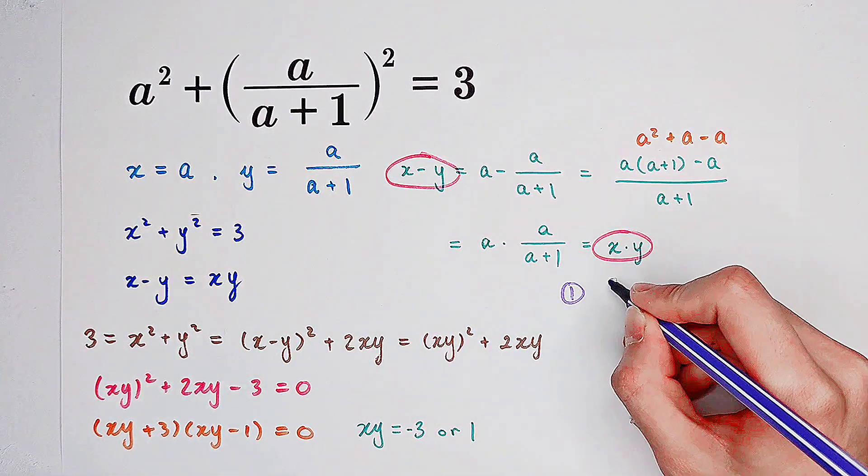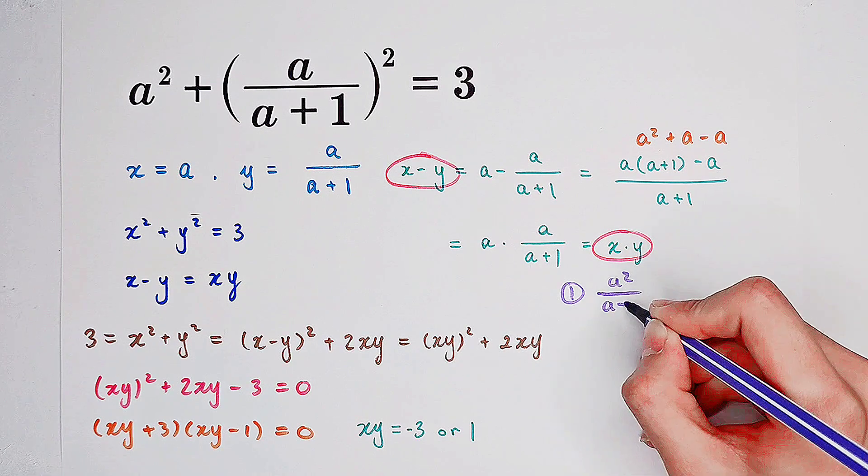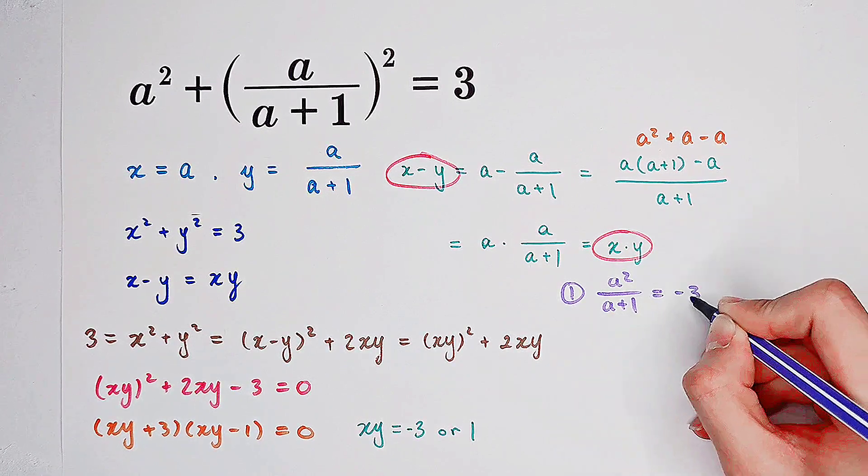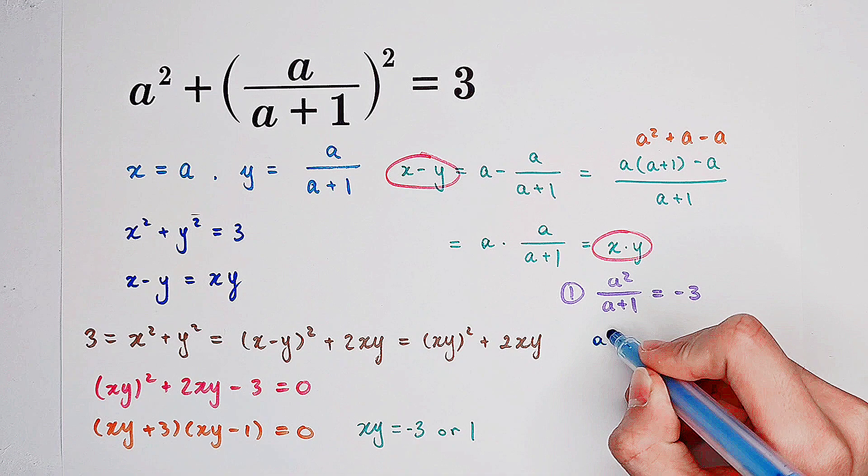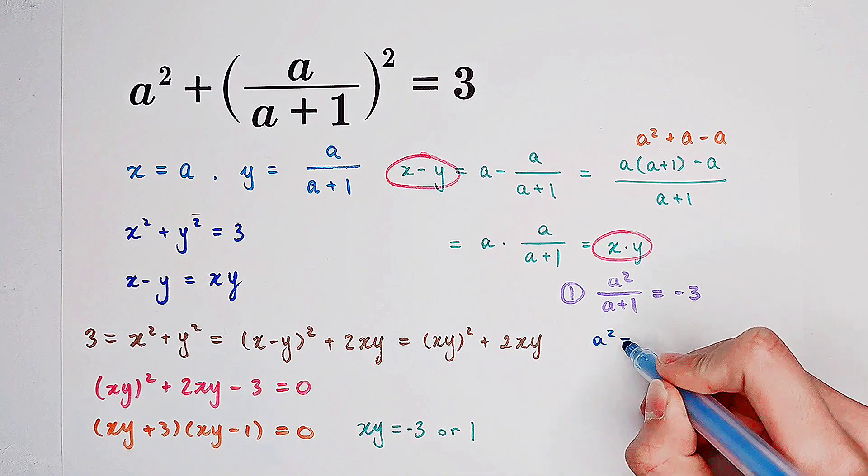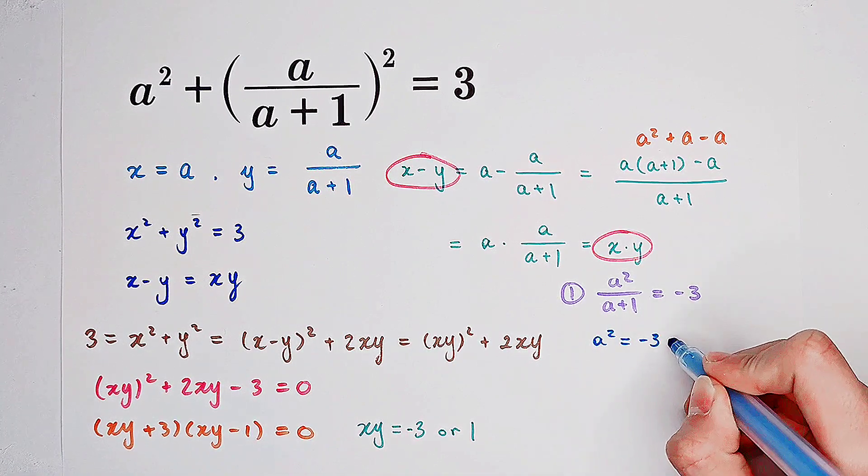So in our first case, we have a squared over a plus 1 equals negative 3. So in this case,